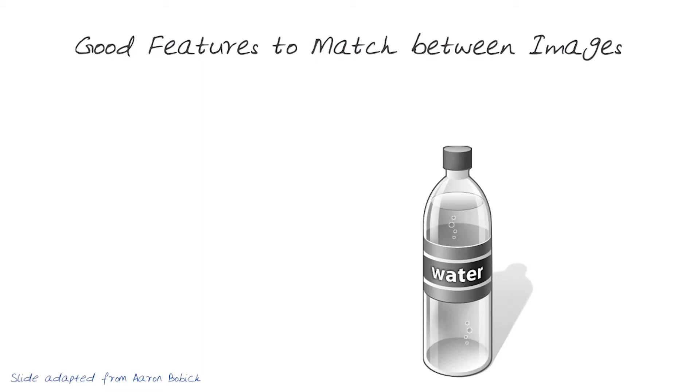So now let's start thinking about what are good features that we can find between two images of a similar scene or the same object that we can then use to register that same feature across two different images.